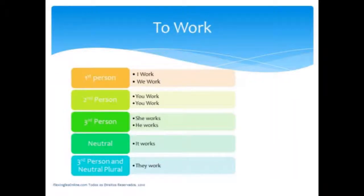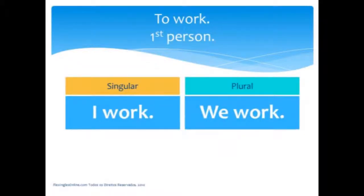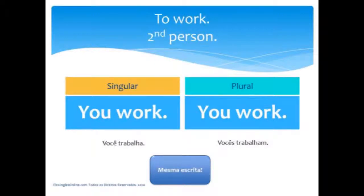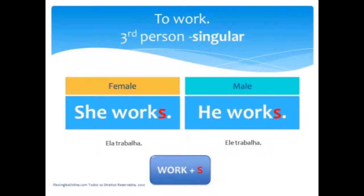Here we have the conjugation of the verb 'to work' in the present tense. In the first person singular we have 'I work,' and in the plural 'we work.' In the second person singular we have 'you work,' and in the plural exactly the same: 'you work.' In the third person singular we divide it by female and male: 'she works' and 'he works' — and you see there is an S at the end of the verb.